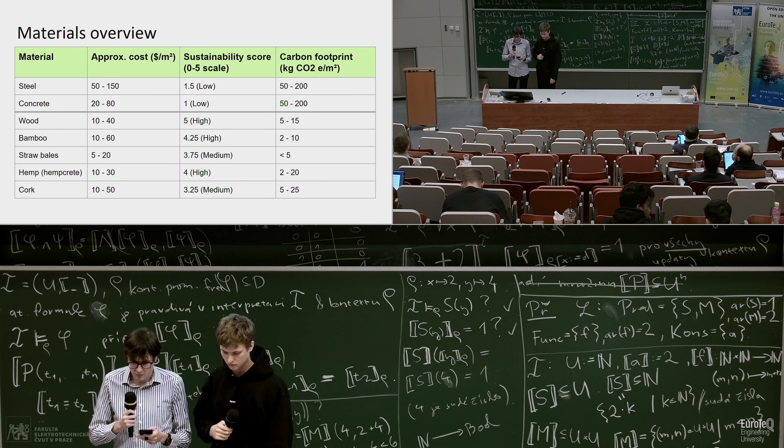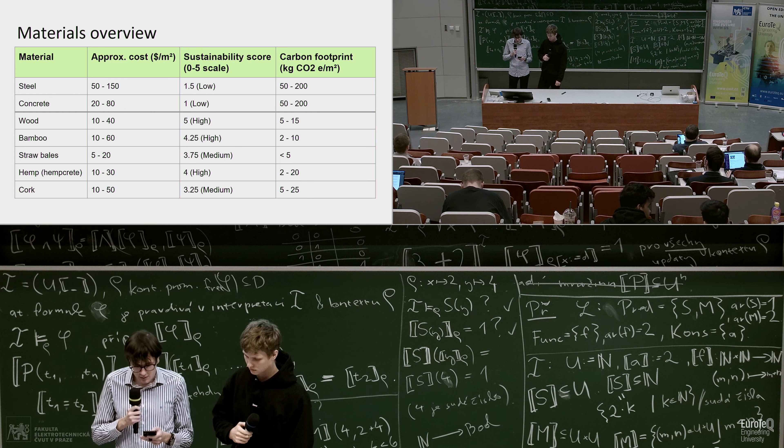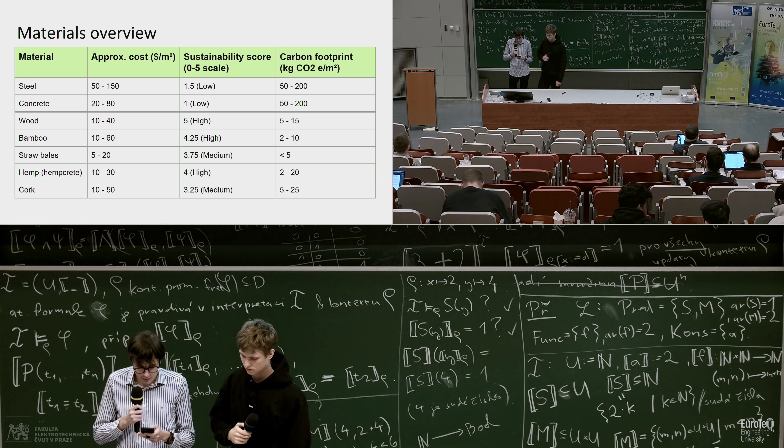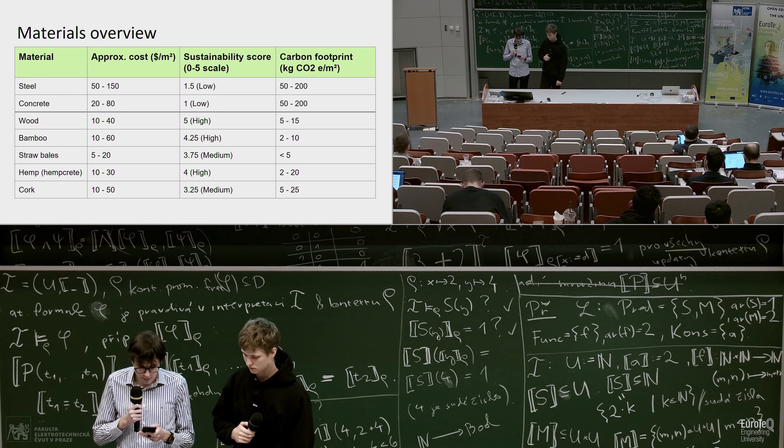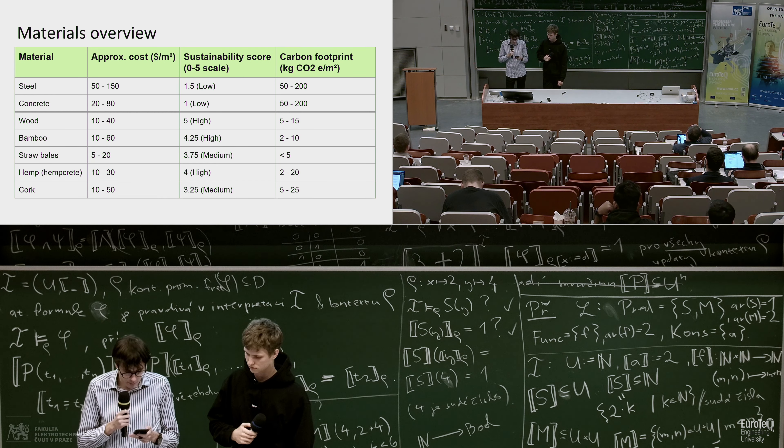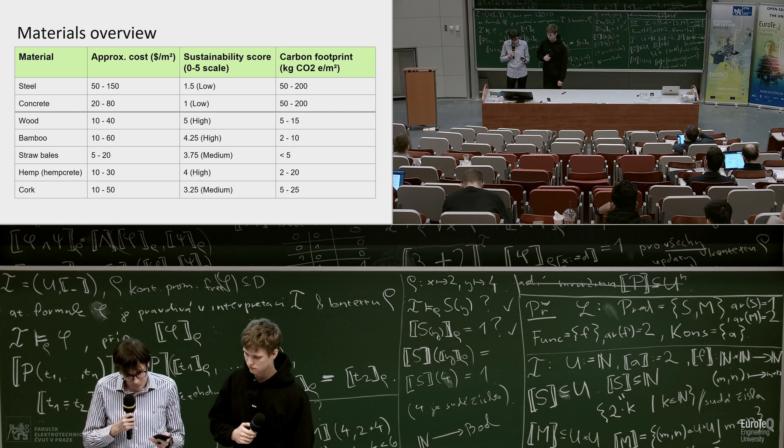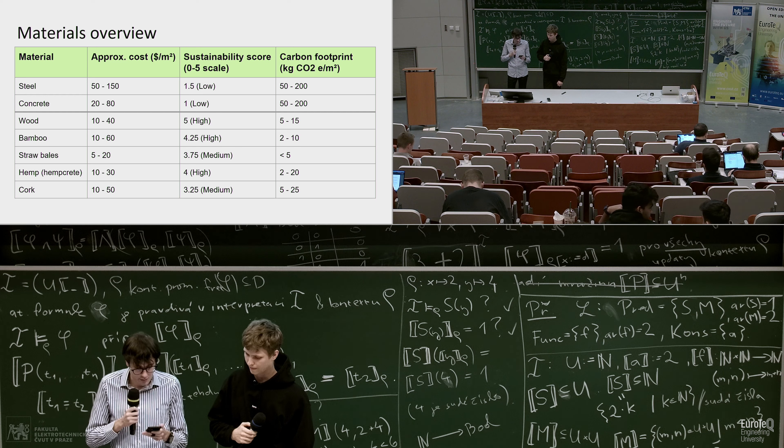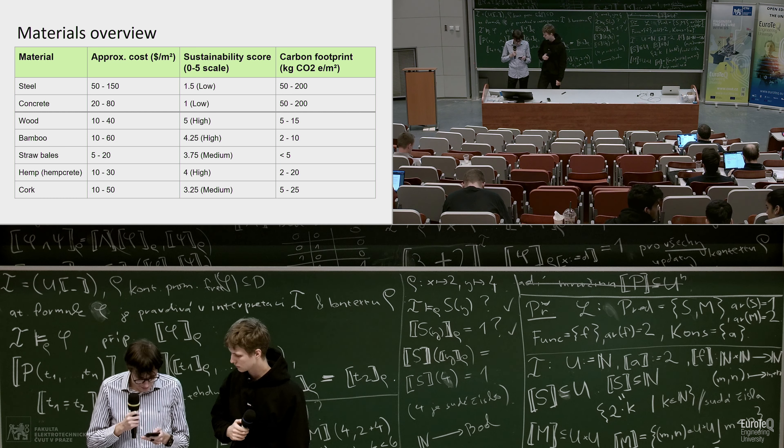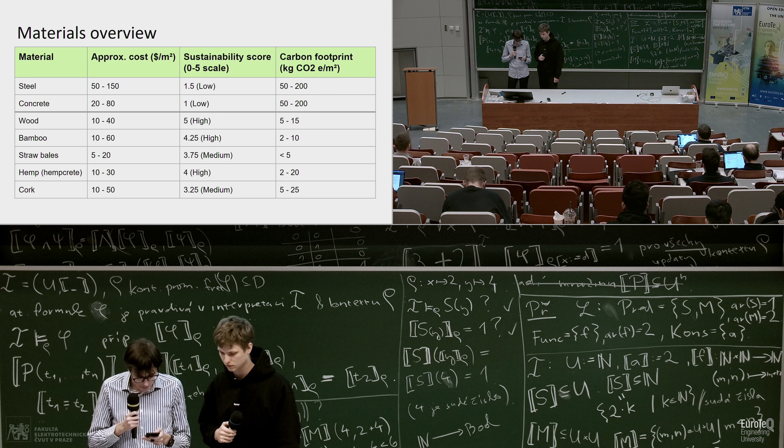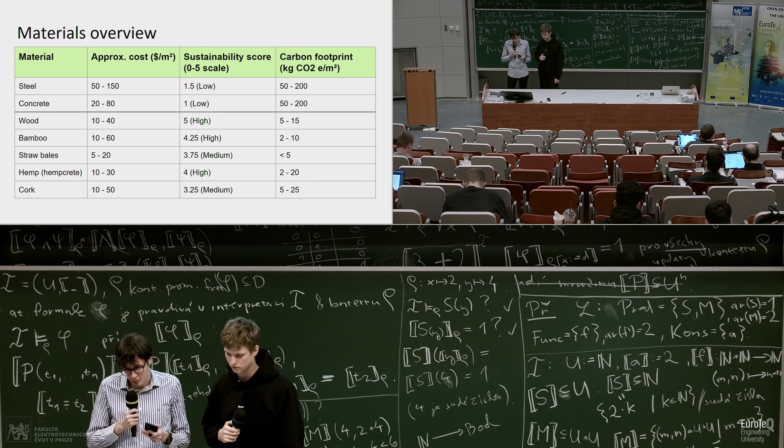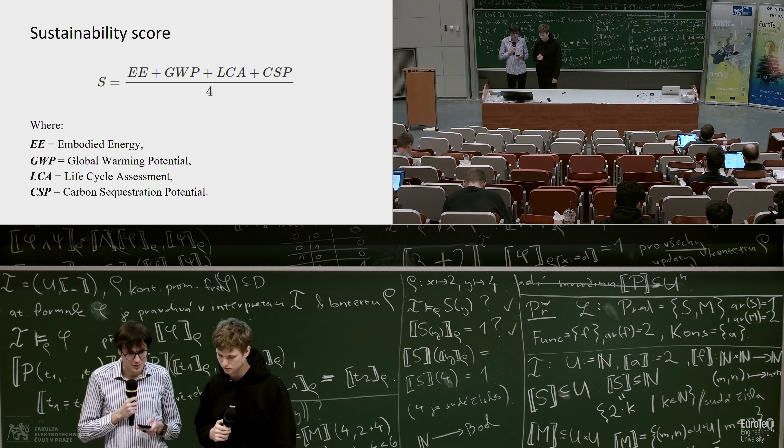Also, talking about these materials, wood products can store carbon over their lifetime, which is really useful for our goals. Bamboo, for example, can sequester more carbon than most other plants. And straw bales have an embedded carbon footprint of just less than five kilograms CO2 per meter. And the hemp, such as cork, is good for carbon footprint.